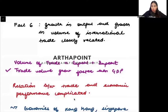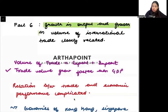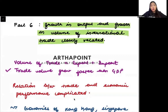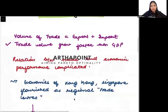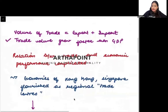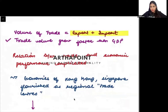Let us now go ahead and talk about Fact 6. The sixth fact states that growth in output and growth in the volume of international trade are closely related to each other. What is trade? Trade is the value of exports and imports together.